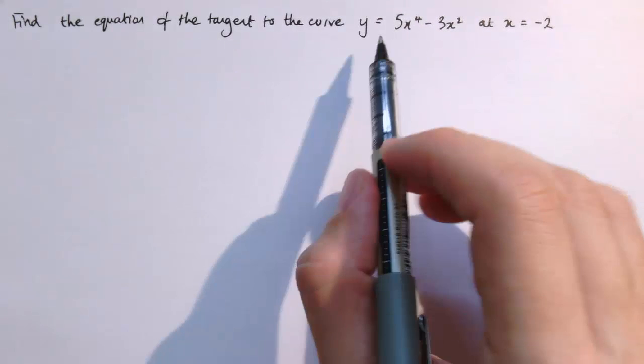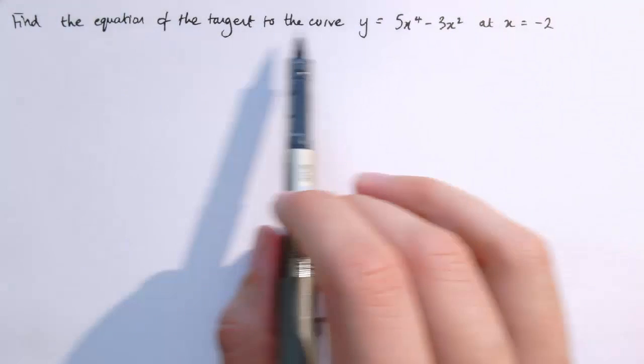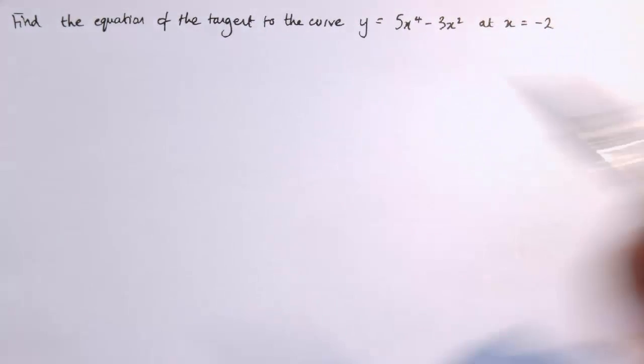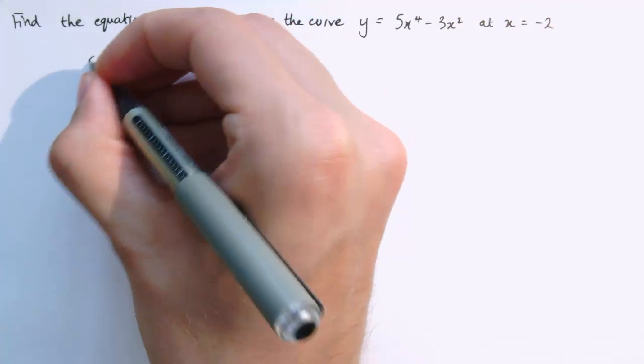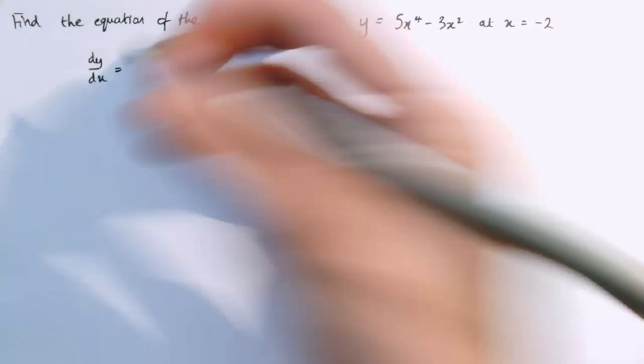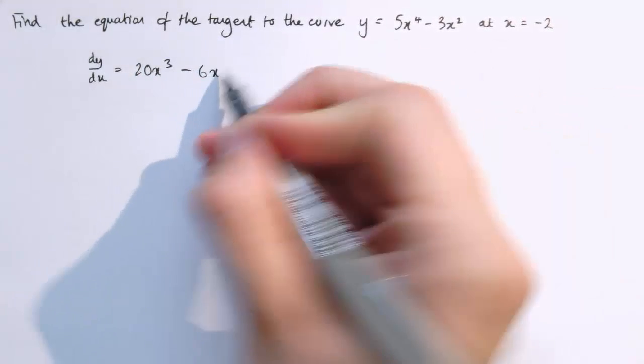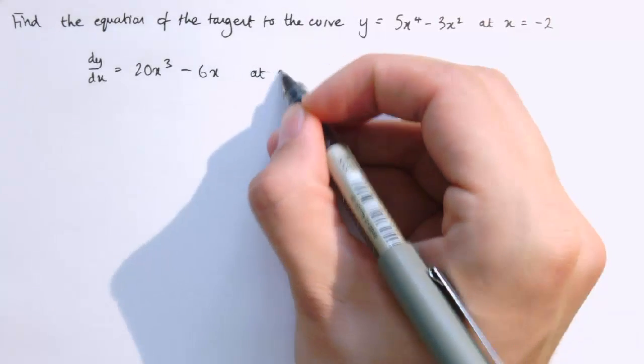Let's do one more example. Find the equation of the tangent to the curve y equals 5x⁴ minus 3x² at x equals minus 2. We're going to do exactly what we did before. Differentiating gives 20x³ minus 6x.